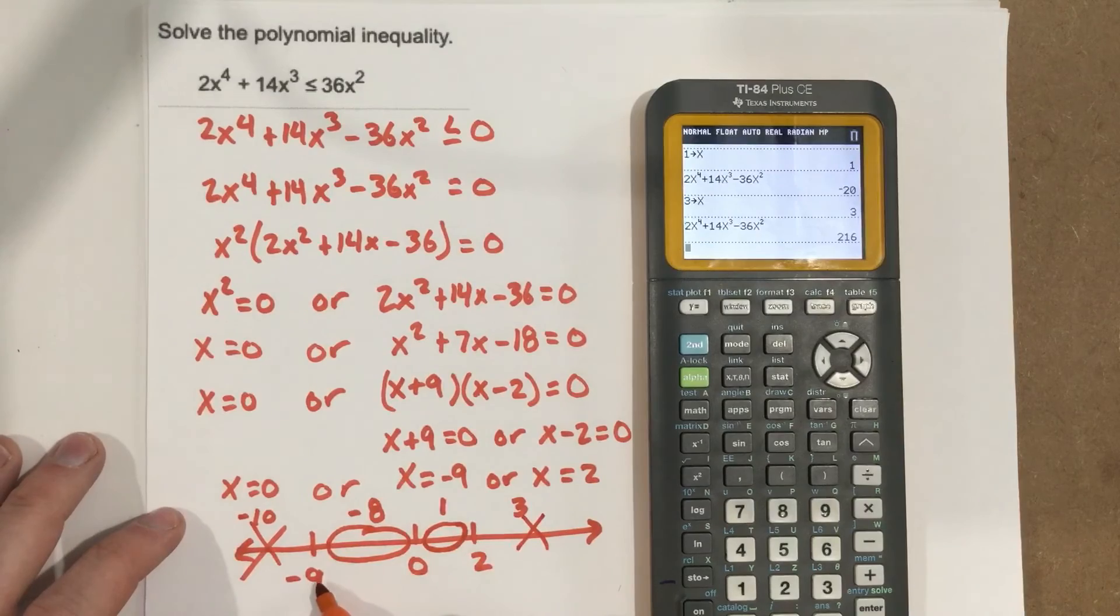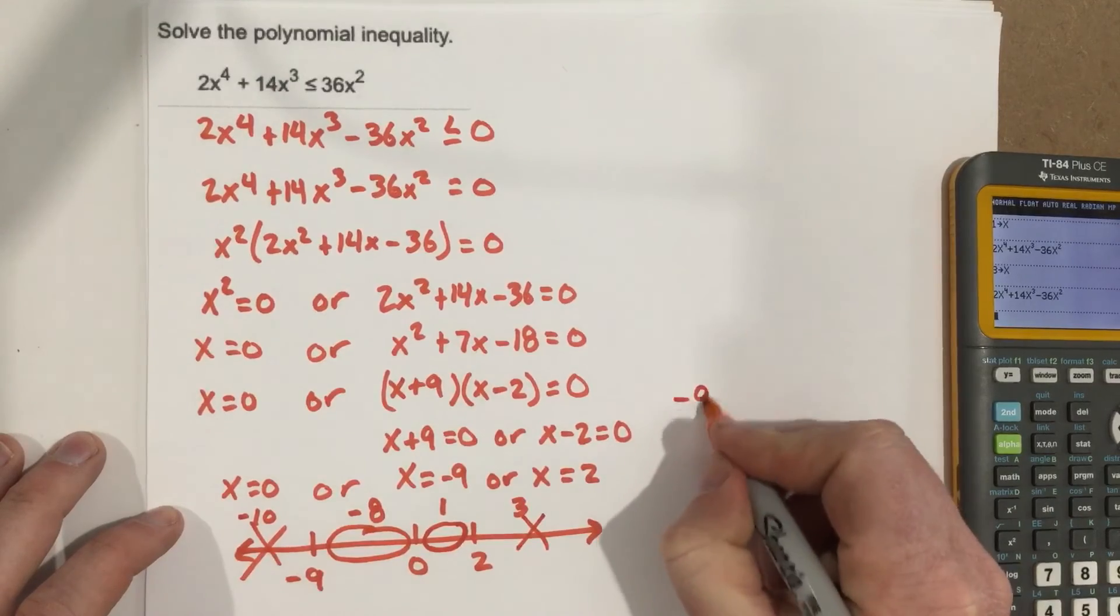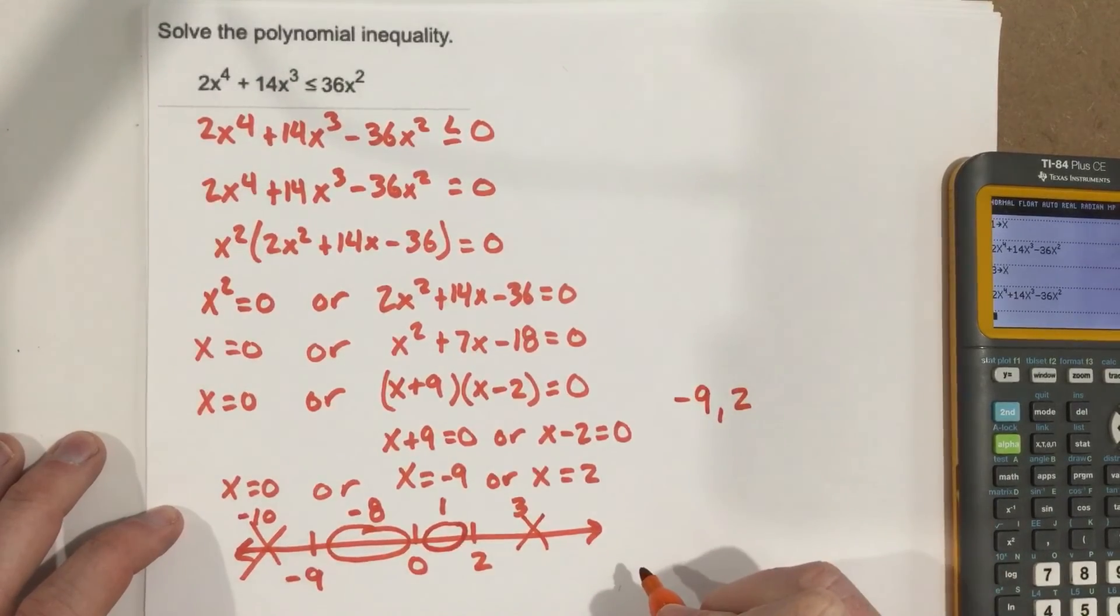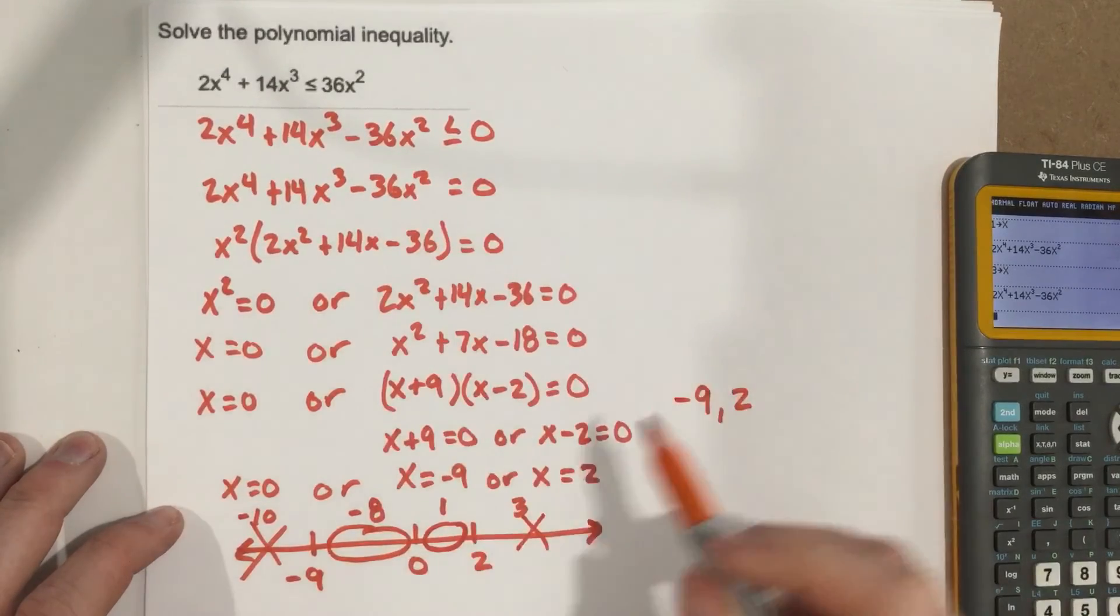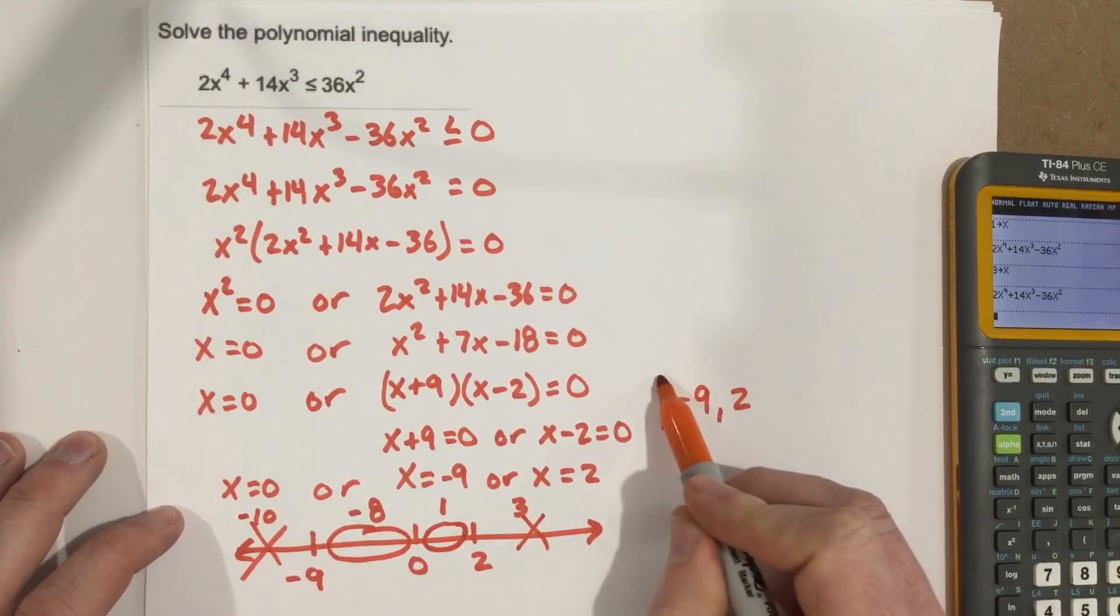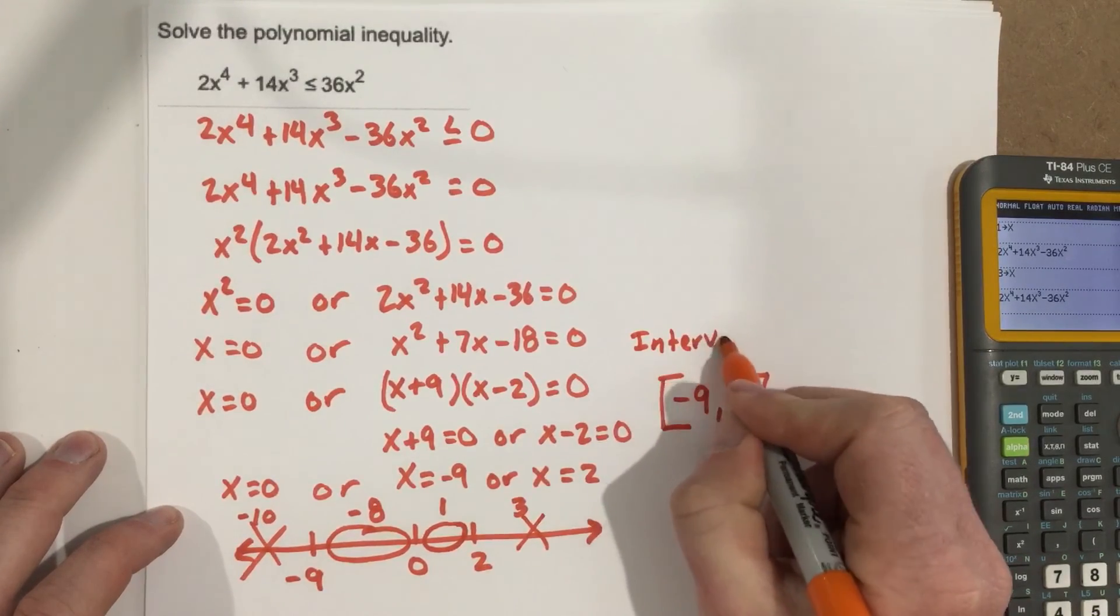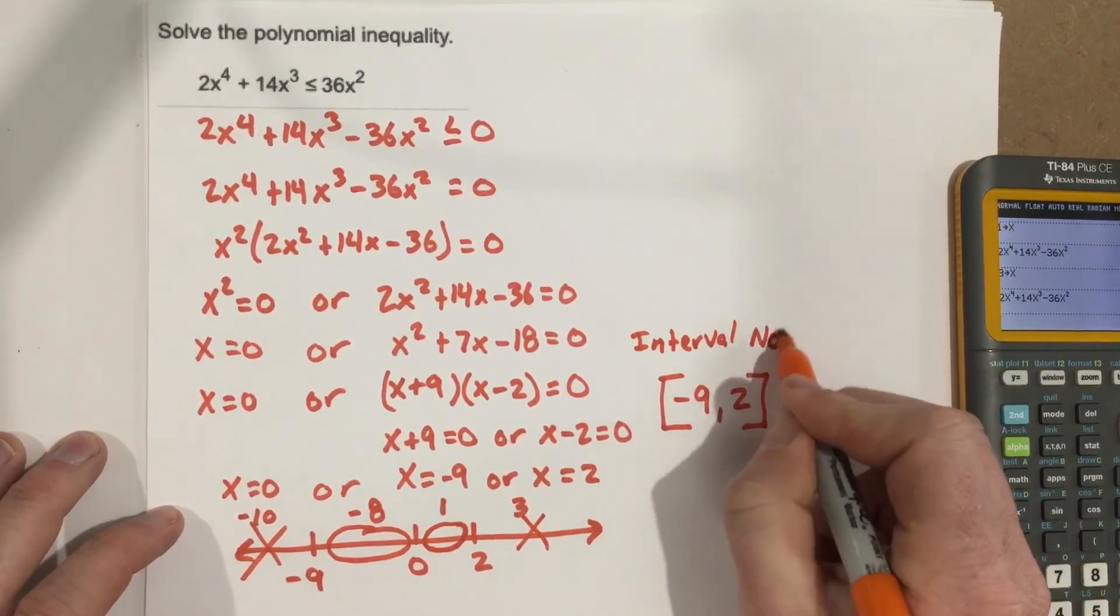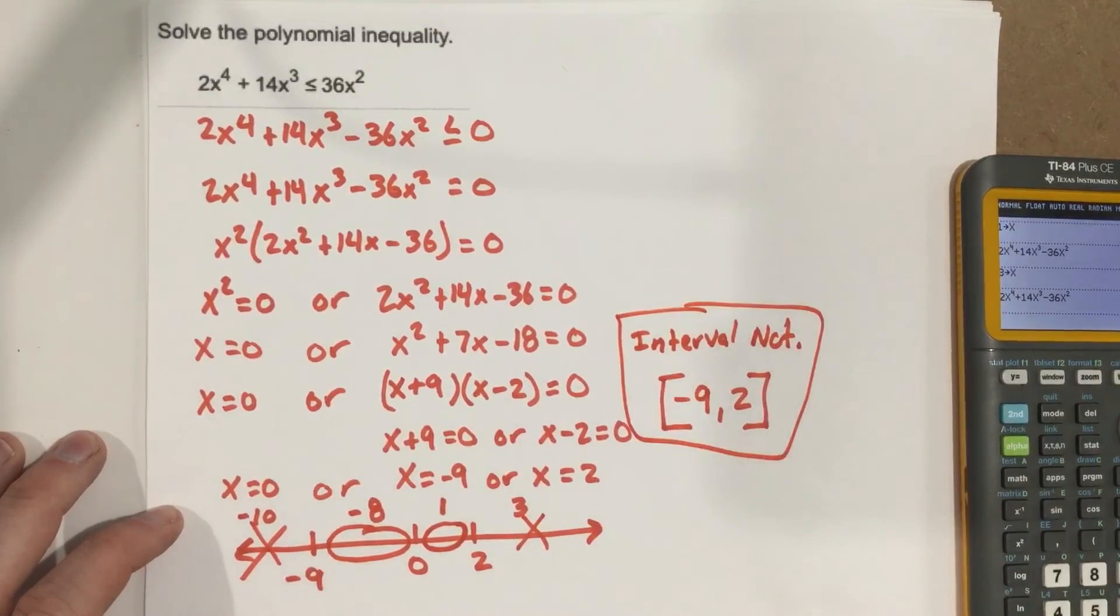So where do the solutions lie? Well, they lie from negative 9 to 2. So the solutions for this problem are negative 9 to 2, if you write in interval notation. And because it's equal, the roots actually work as well. So we can say bracket, bracket. Remember, this is interval notation. And so our solution is negative 9 to 2.